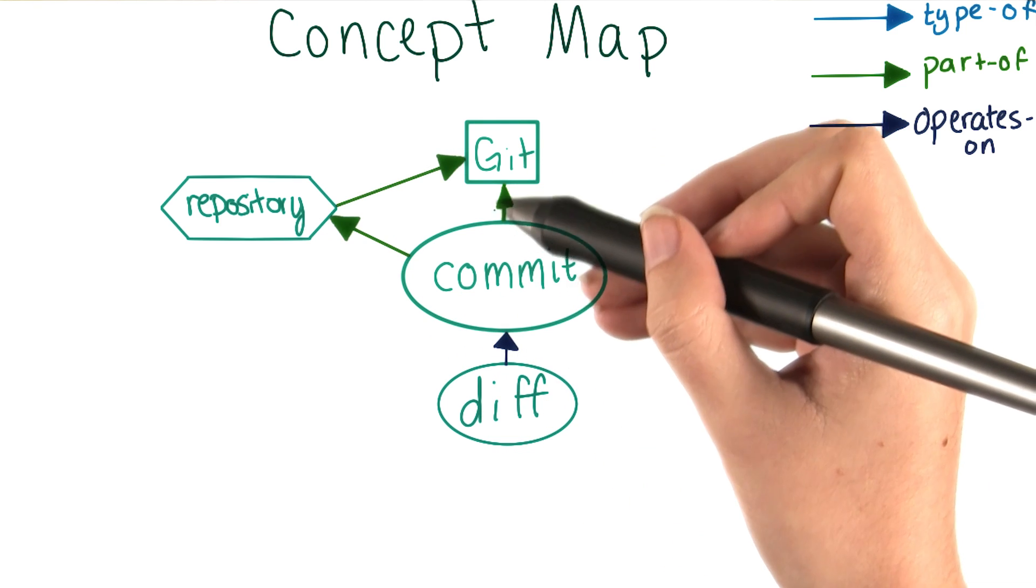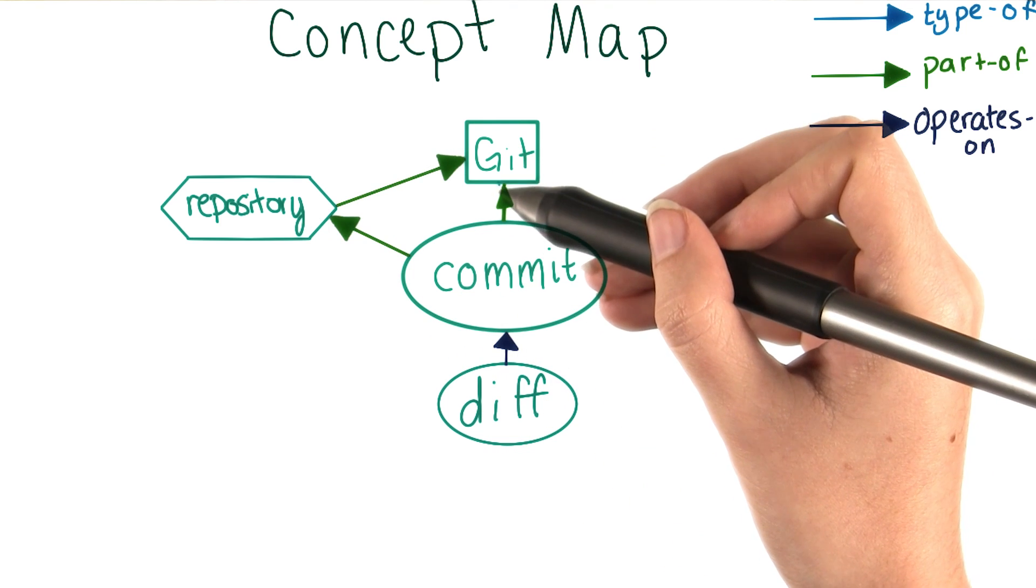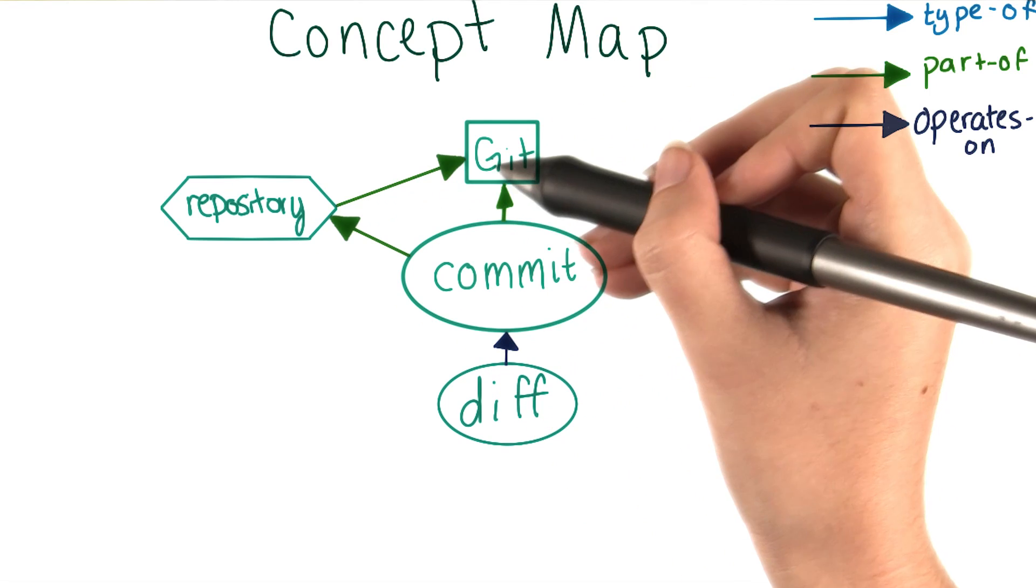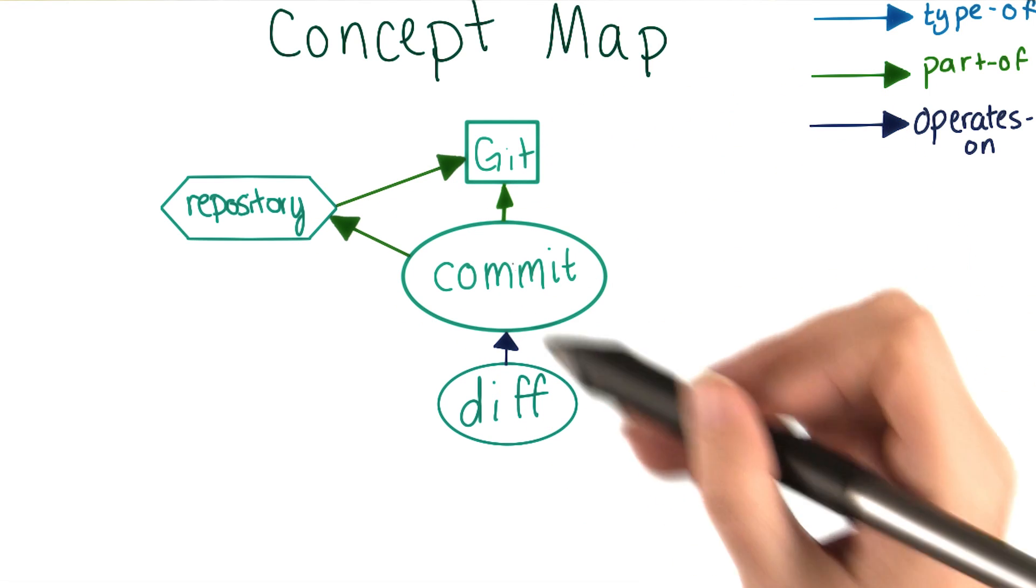There's no need to keep this connection between commit and git since they're already connected through repository. So let's go ahead and get rid of that.